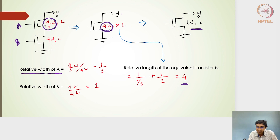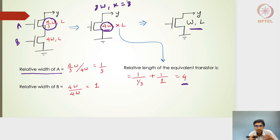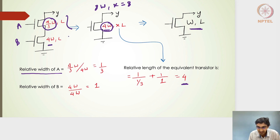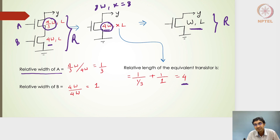In fact, I can choose any width for the equivalent transistor — if I choose 8W, x turns out to be 8; if I choose 10W, x turns out to be 10. This is because I chose 4/3 and 4 such that the equivalent falling resistance is R, and that is why the overall falling resistances derived from the current of Y are consistent.